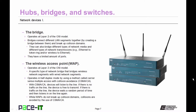A special type of bridge is the wireless access point. It also operates at layer 2 of the OSI model. It's a specific type of network bridge that bridges wireless network segments with wired network segments. The wireless access point can only operate in half-duplex mode, and it does so using a method called carrier sense multiple access with collision avoidance, CSMA/CA. With CSMA/CA, devices will listen to the line. If there is no traffic on the line, the device is free to transmit. If there is traffic on the line, the device waits a random period of time and then listens again. While wireless access points do not break up collision domains, collisions are avoided by the use of CSMA/CA.